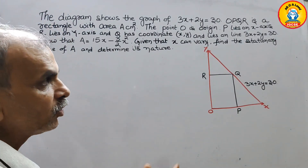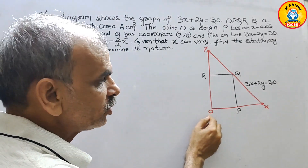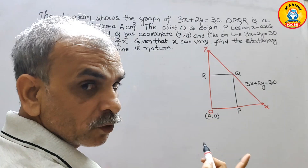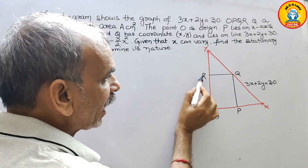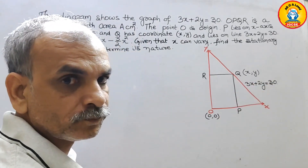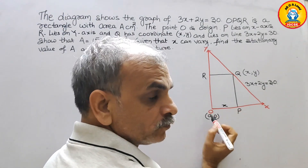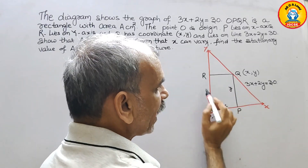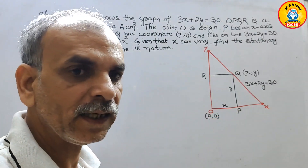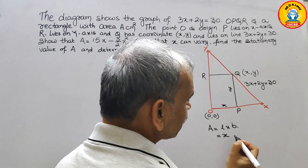Now understand this. This is your coordinate system. They have given O, which means this is the origin, so we write O as (0, 0). They have told us P lies on the x-axis, R lies on the y-axis, and the coordinate of Q is (x, y). That means from the origin to P it is x, and from P to Q it is y. Since this is a rectangle, area equals length times breadth, so area equals x times y.